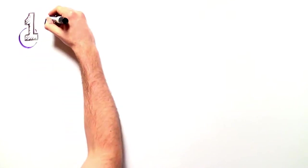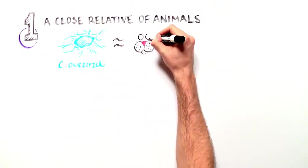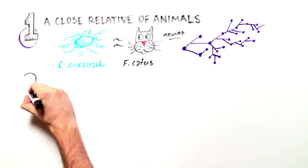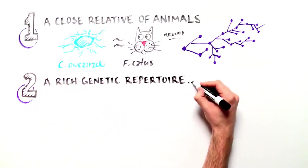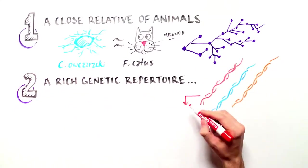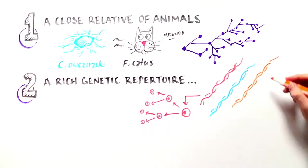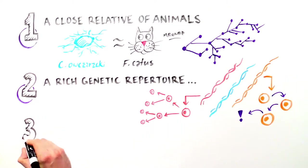First, it holds a key phylogenetic position as a close relative of animals. Second, it has a rich repertoire of genes involved in multicellular functions, such as cell differentiation and cell signaling. Third, Capsospora's life cycle comprises three different stages, with each stage involving a different cell type.